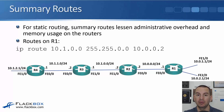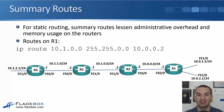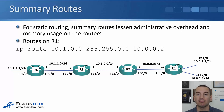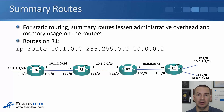For static routing, summary routes lessen the administrative overhead, because if you've got fewer routes to configure, that lessens the workload on you. It also lessens the memory usage on the routers — the fewer routes there are in the routing table, the less memory it's going to take up. In the example here, we're going down from three routes to one route, which isn't much of a difference, but in large environments it can make a big difference.